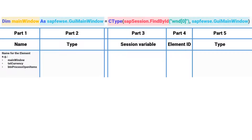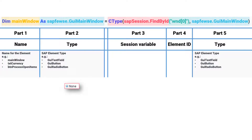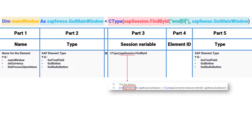The second and fifth parts are the same — it is the element type. That means we choose, for example, GUI text field for a text field, GUI button for a button, or GUI radio button for a radio button. The third part consists of three parts: CType at the beginning, the SAP session variable which we defined in the code, and the function findById to select the element with its ID.